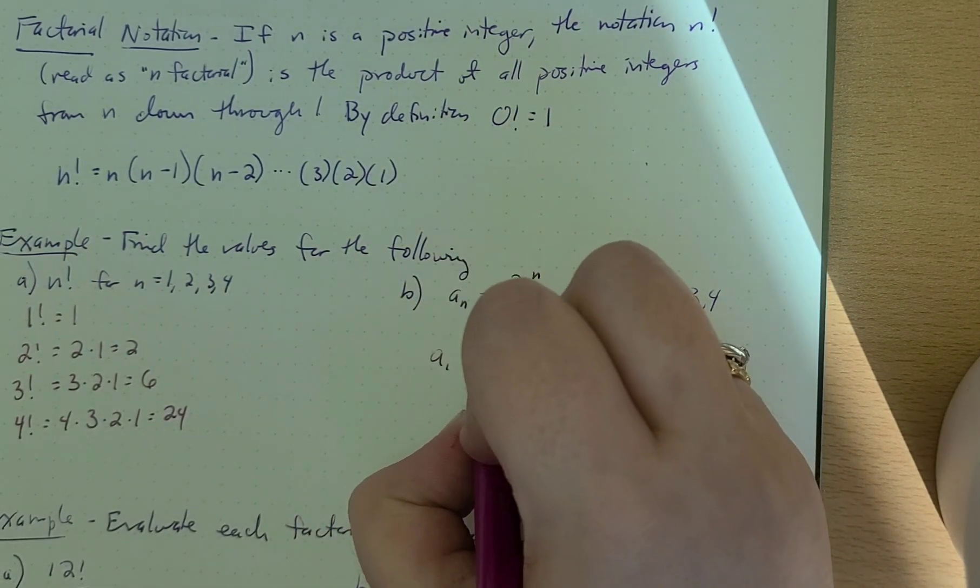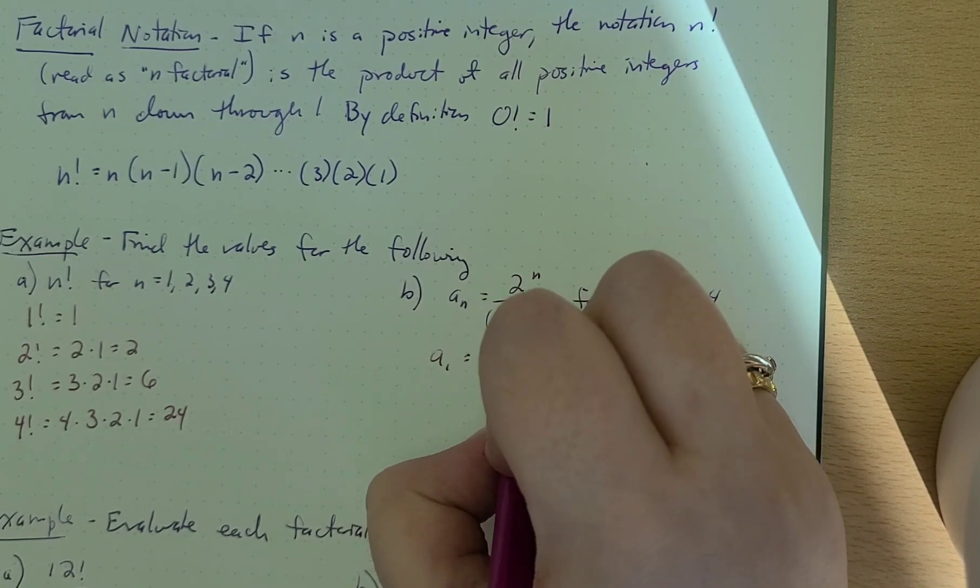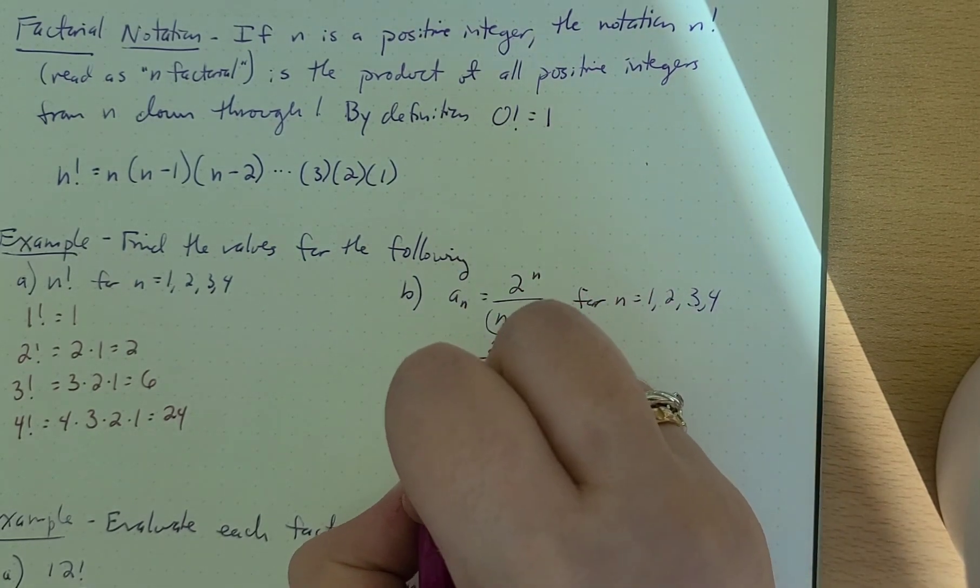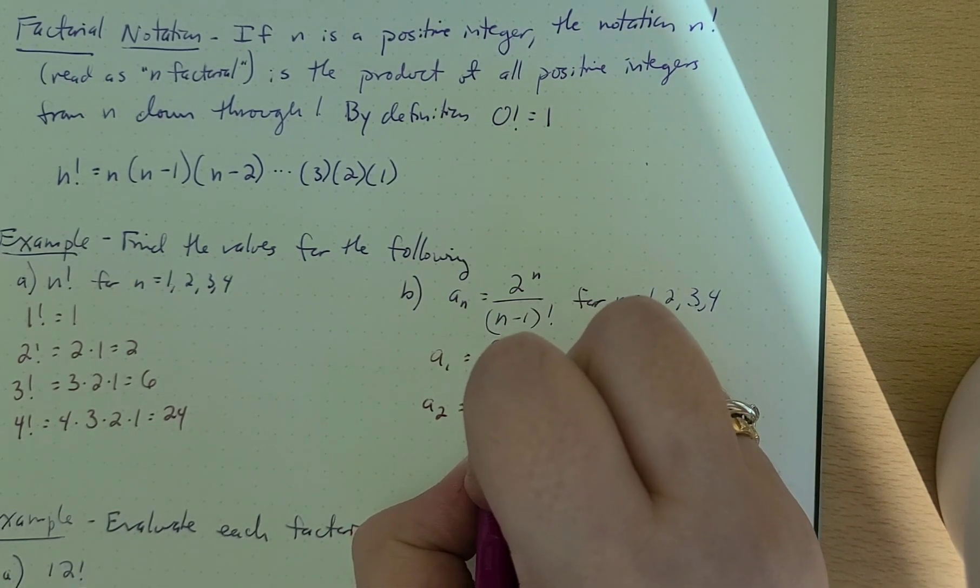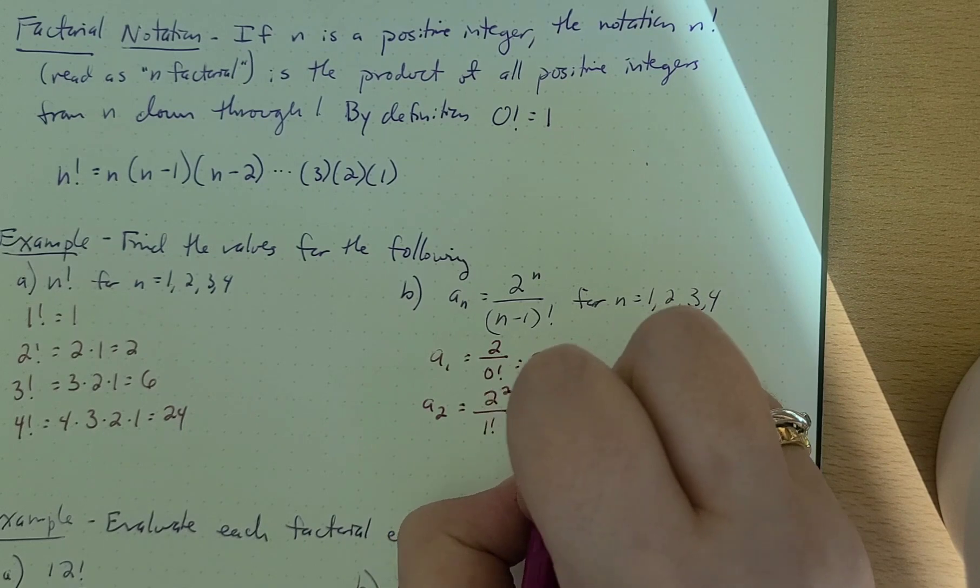So a sub 1 is equal to 2 over 0 factorial, which is just equal to 2. Because remember, 0 factorial is 1. a sub 2 is equal to 2 squared over 1 factorial. So that's equal to 4 over 1, which is 4.